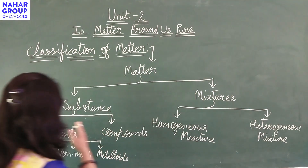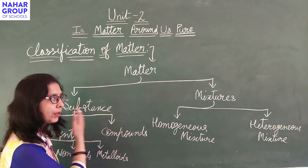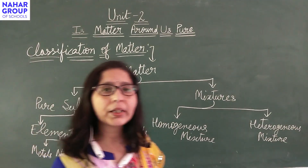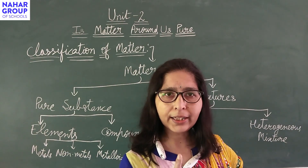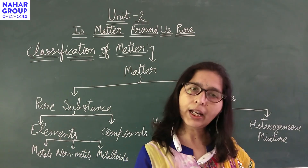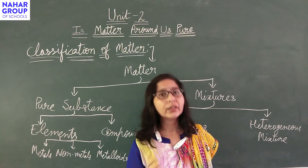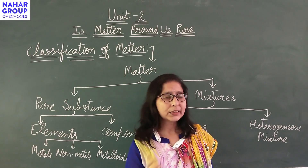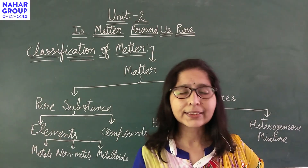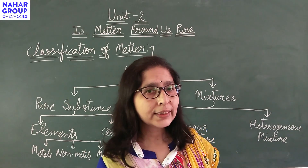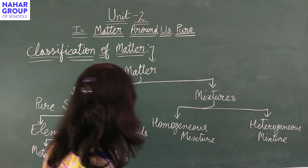Pure substance is divided into two parts. One is element — elements are made up of only one type of particle, one atom. For example, hydrogen, lithium, beryllium, sodium — these are elements because they are made up of only one atom. As well as they cannot be broken into smaller pieces. Those are called elements.